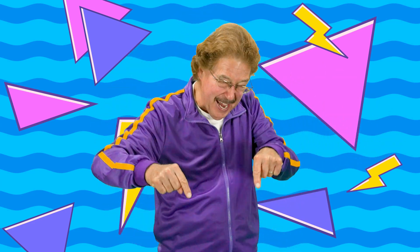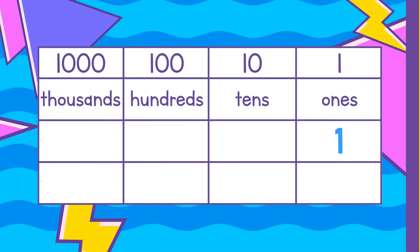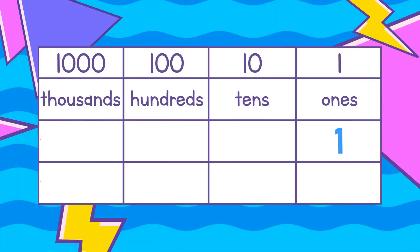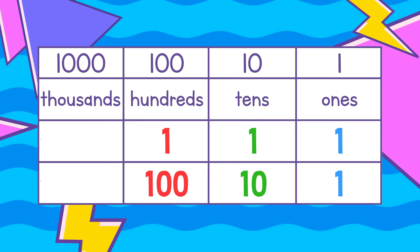So let's learn and get right with it. A 1 in the ones place is worth 1. A 1 in the tens place is worth 10. A 1 in the hundreds place is worth 100. A 1 in the thousands place is worth 1000.